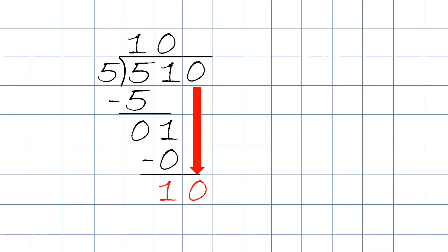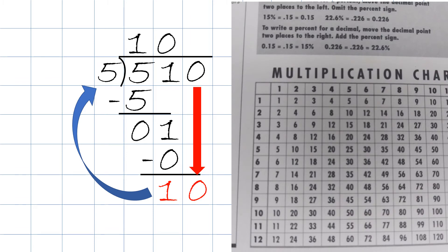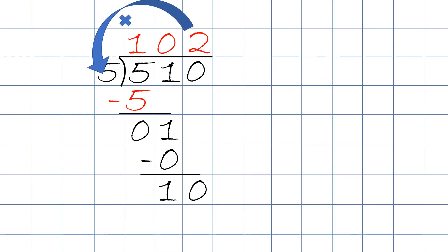We then take 10 divided by 5. You could do this in your head or use the multiplication chart. Come up to the 5 column, highlight the 10, and 10 divided by 5 — when we draw the arrow straight to the left, the answer is 2. We put the 2 on top of the 0. Then we take 2 times 5, the answer will be 10 — we write it below. We subtract: 10 minus 10 will be 0. When the answer is 0 and we have no more to bring down, we do not write remainder 0. So the answer will just be 102. So 510 divided by 5 will be 102. 102 is the quotient.